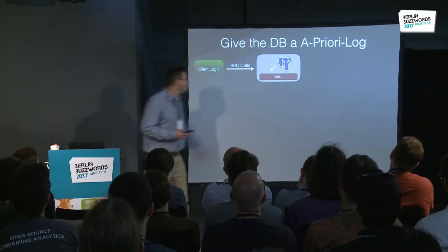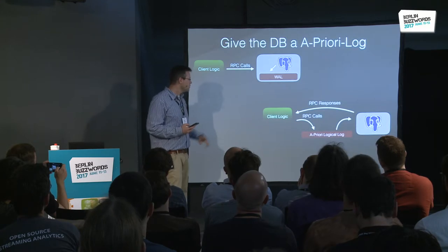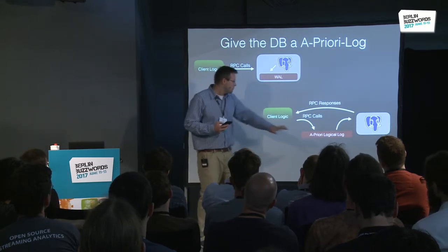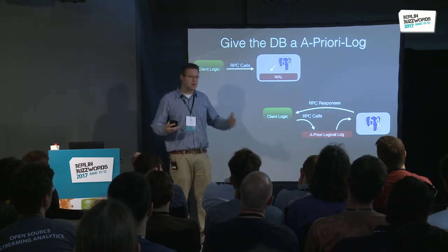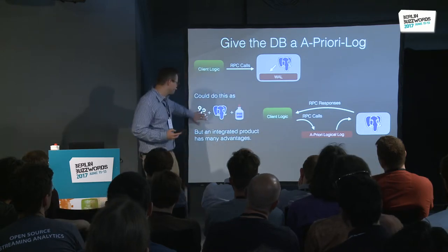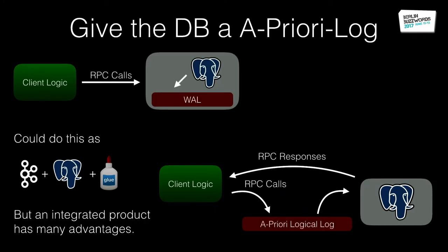Postgres has a write-ahead log, which has been standard in the industry for a long time. I can take that write-ahead log and create an a priori logical log — which looks a bit like sticking Kafka in front of Postgres. I could build this with Kafka and Postgres and glue code, but there's no reason I can't integrate this into the database itself. This lets me do things like teeing streams, going to a point in time, and replicating between data centers using a logical a priori log. There are trade-offs and downsides too.